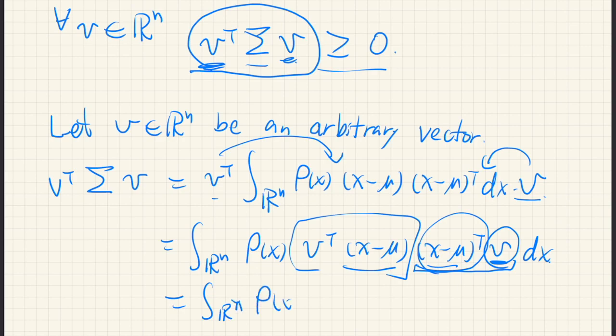Rho of x, this is actually x minus mu transpose v, everything transpose. And this same vector actually appears here.